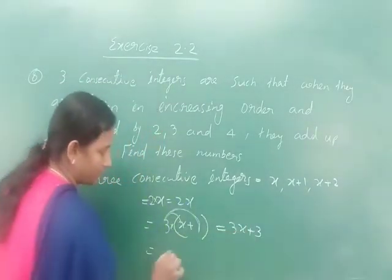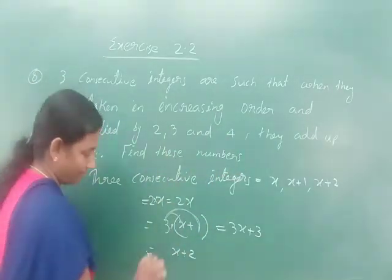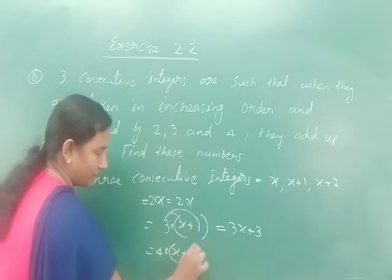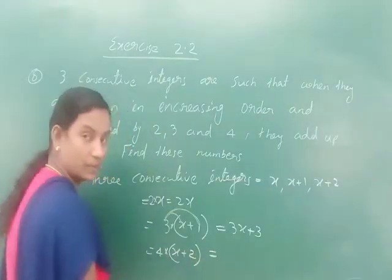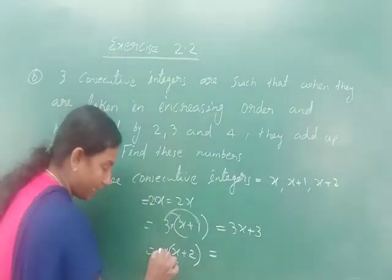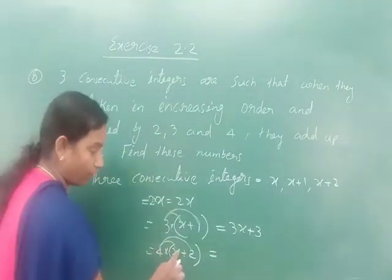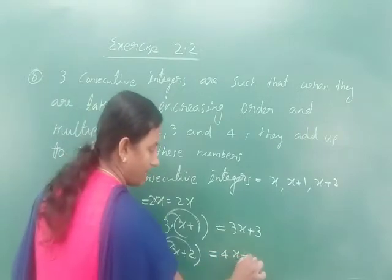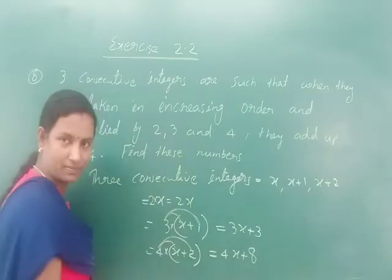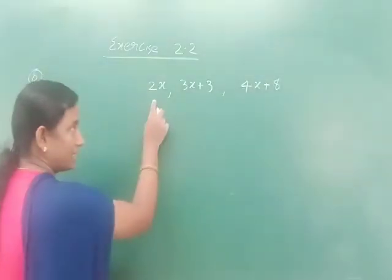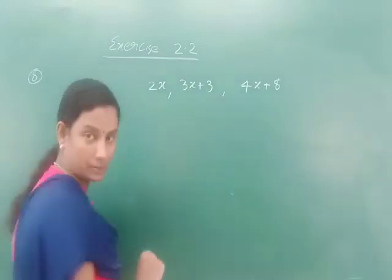The third integer is x+2, multiplied by 4. So 4 into (x+2). Applying the distributive property: 4 into x is 4x, plus 4 into 2 is 8, giving 4x+8. So the three terms are 2x, 3x+3, and 4x+8.